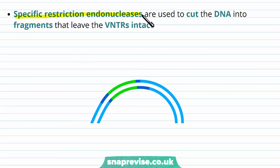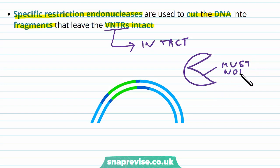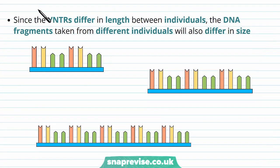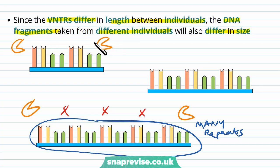The specific restriction endonucleases are used to cut the DNA into fragments that leave the VNTRs intact. These repeats inside the non-coding areas need to be kept intact because this is what helps us make the unique DNA profile — so the enzyme that cuts the DNA must not recognise and cut VNTRs. Since the VNTRs differ in length between individuals, the DNA fragments taken from different individuals will also be different in size. If someone has many repeats, the enzyme cuts either side of that area leaving a long fragment, whereas if someone only has two repeats, that fragment will be much shorter. People have different numbers of repeats at different places, and therefore they will have different fragment lengths.